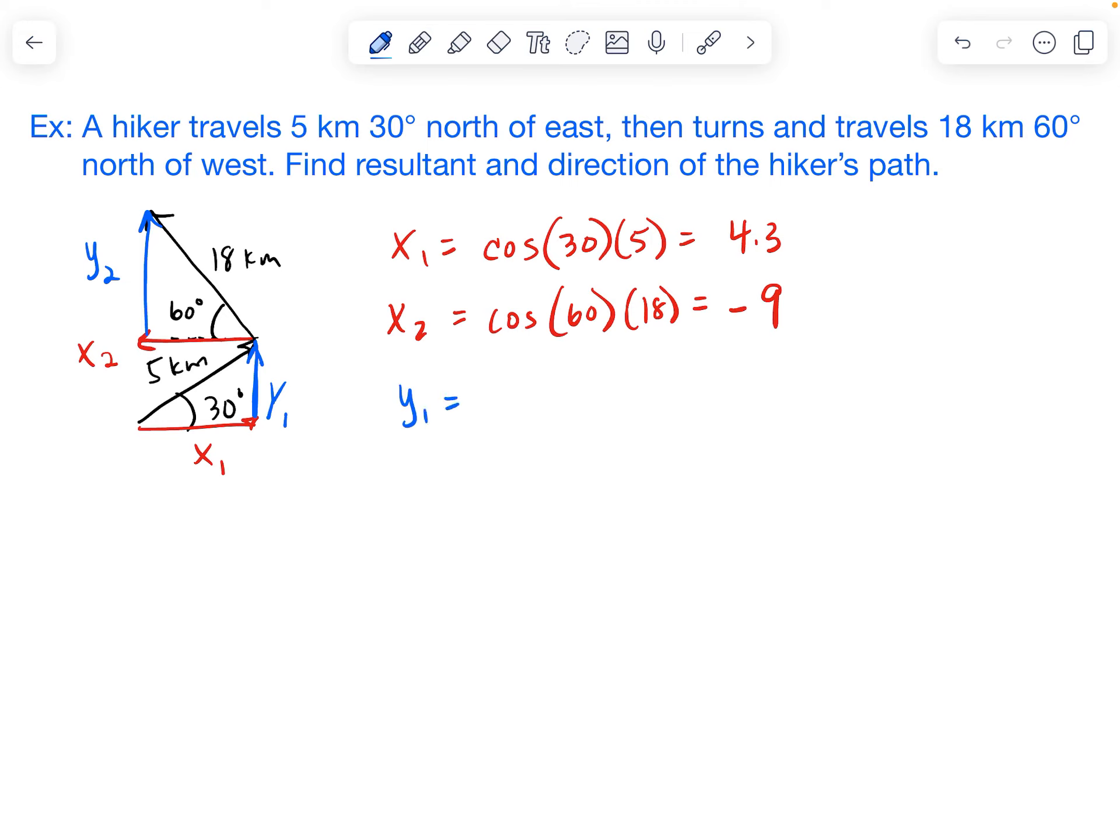So for our y's, we are going to be using the sine function. And that's because sine is opposite over hypotenuse. So in relation to this angle, y is opposite of it. So sine of 30 times 5 for y1.